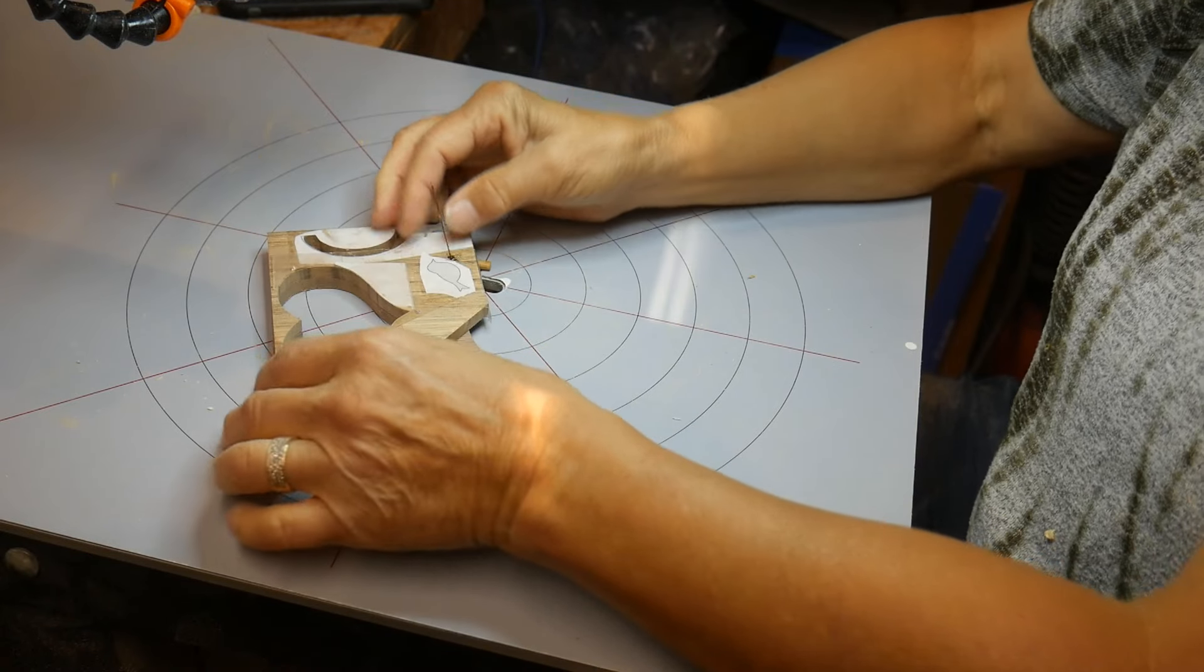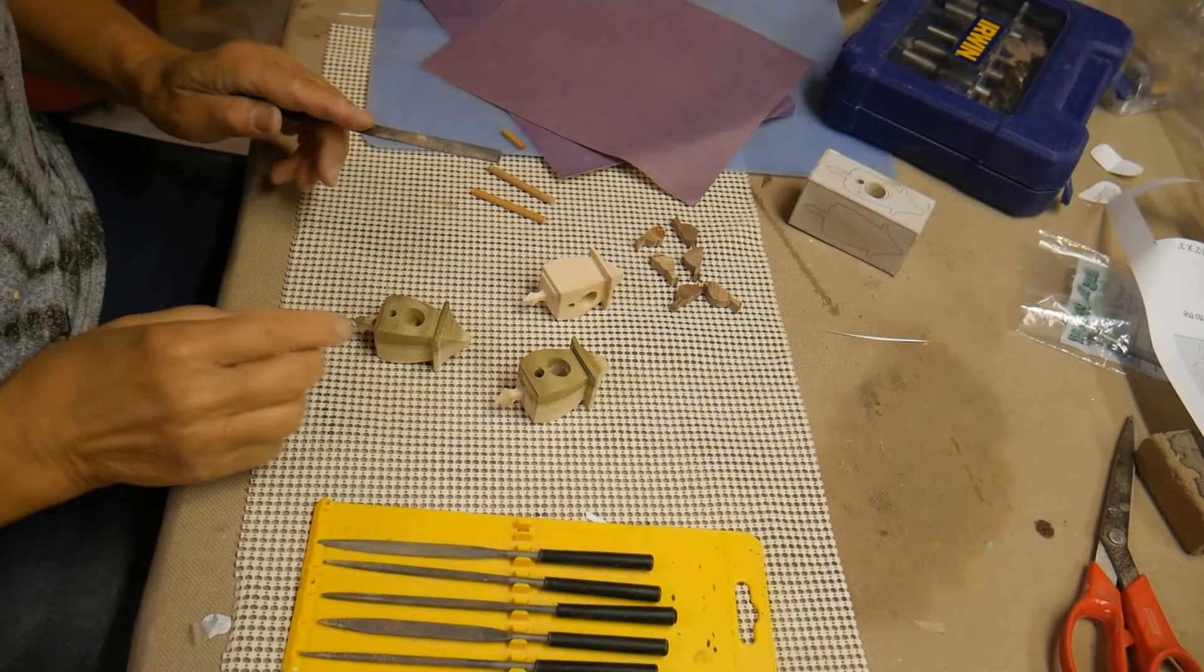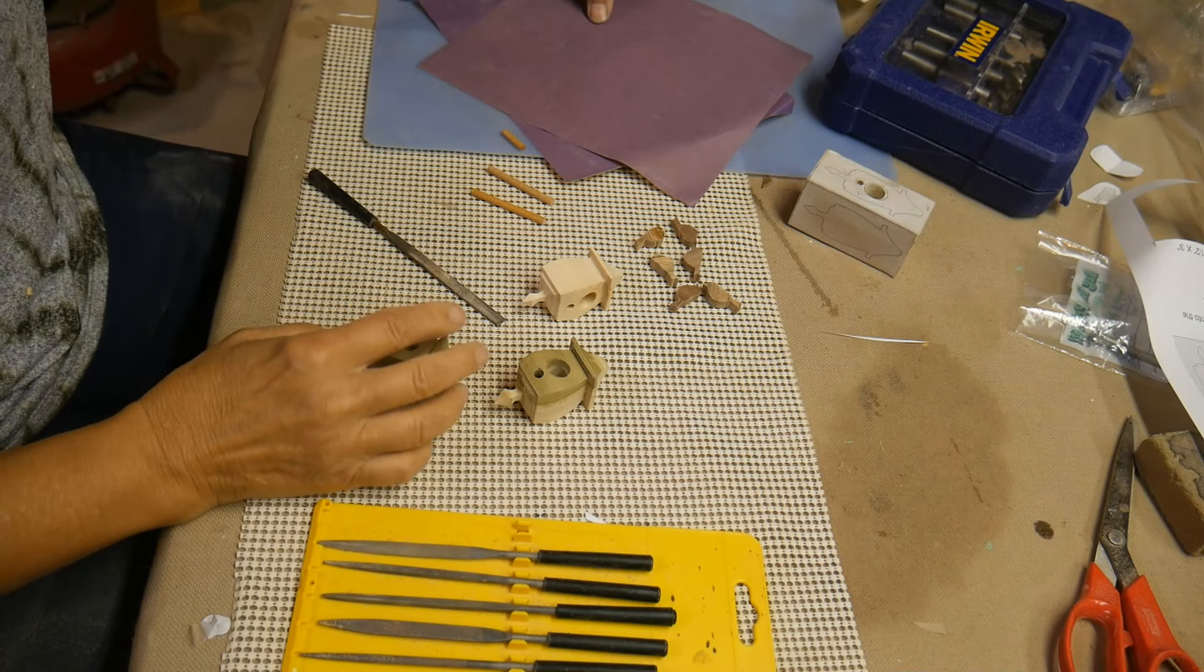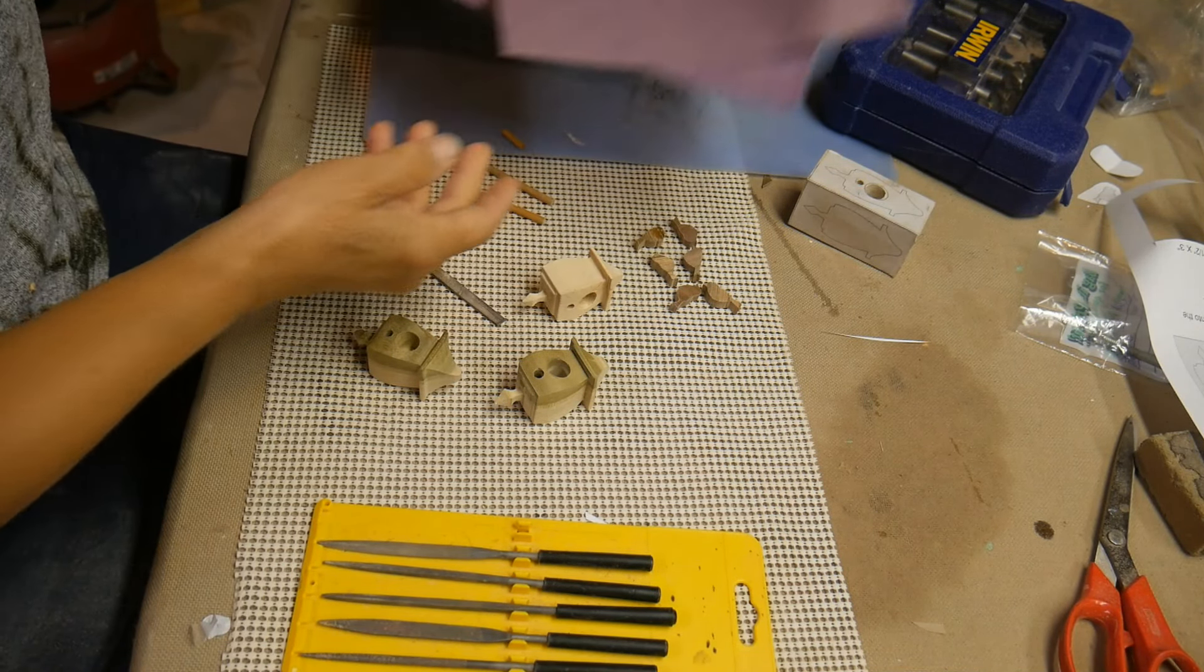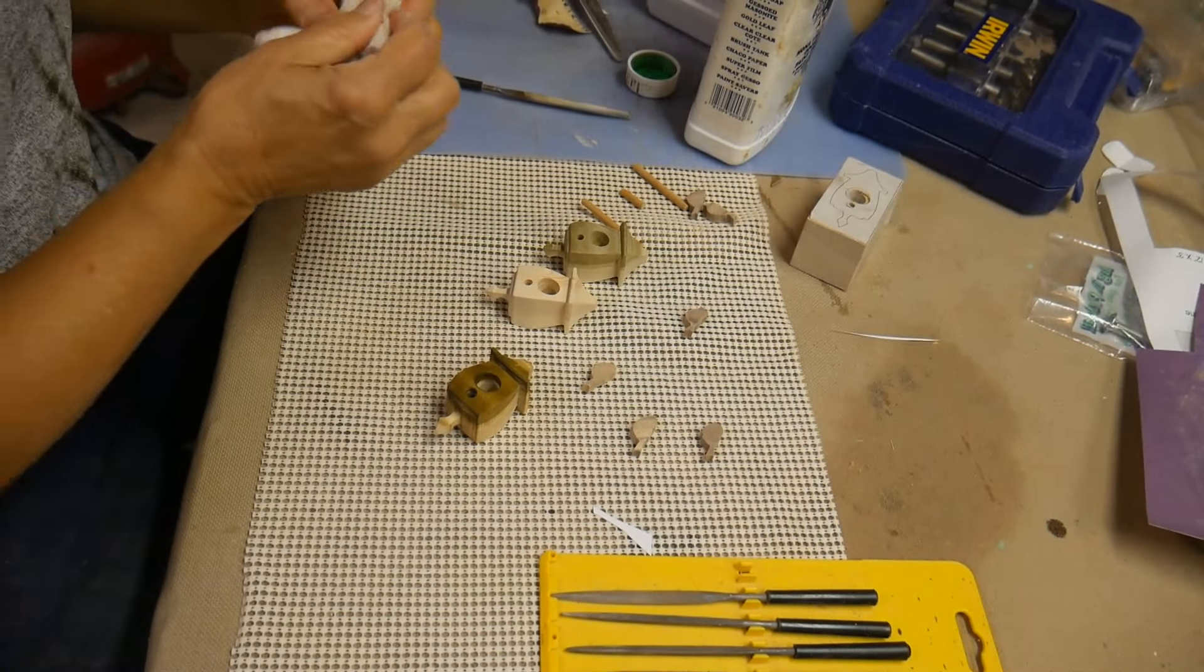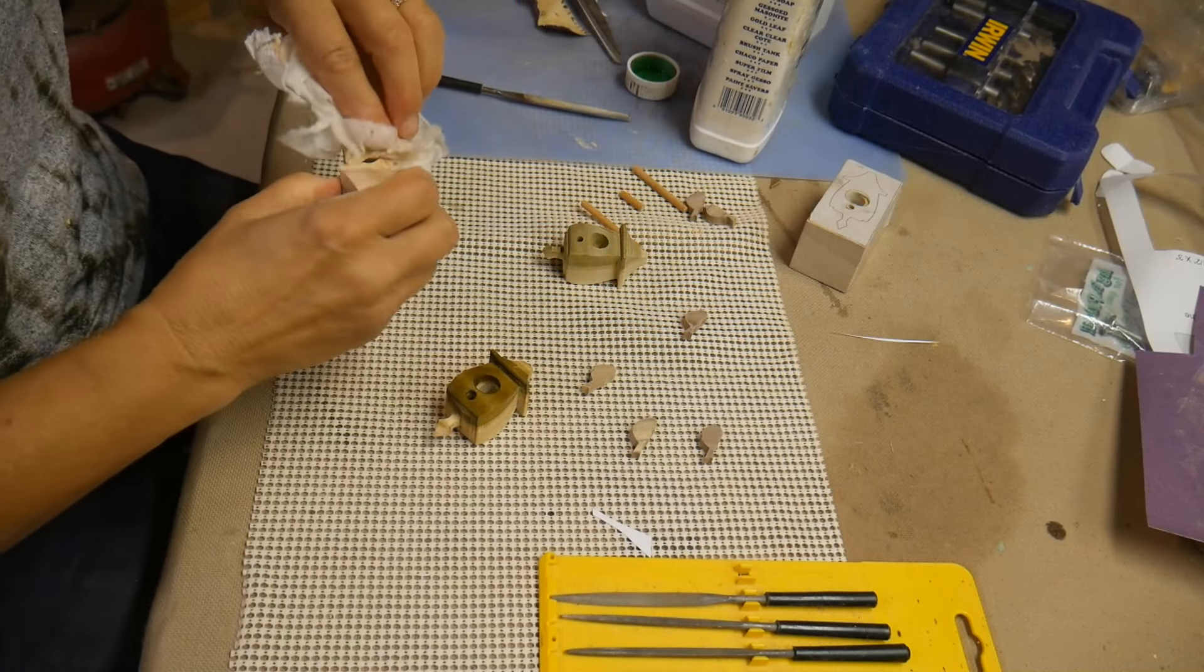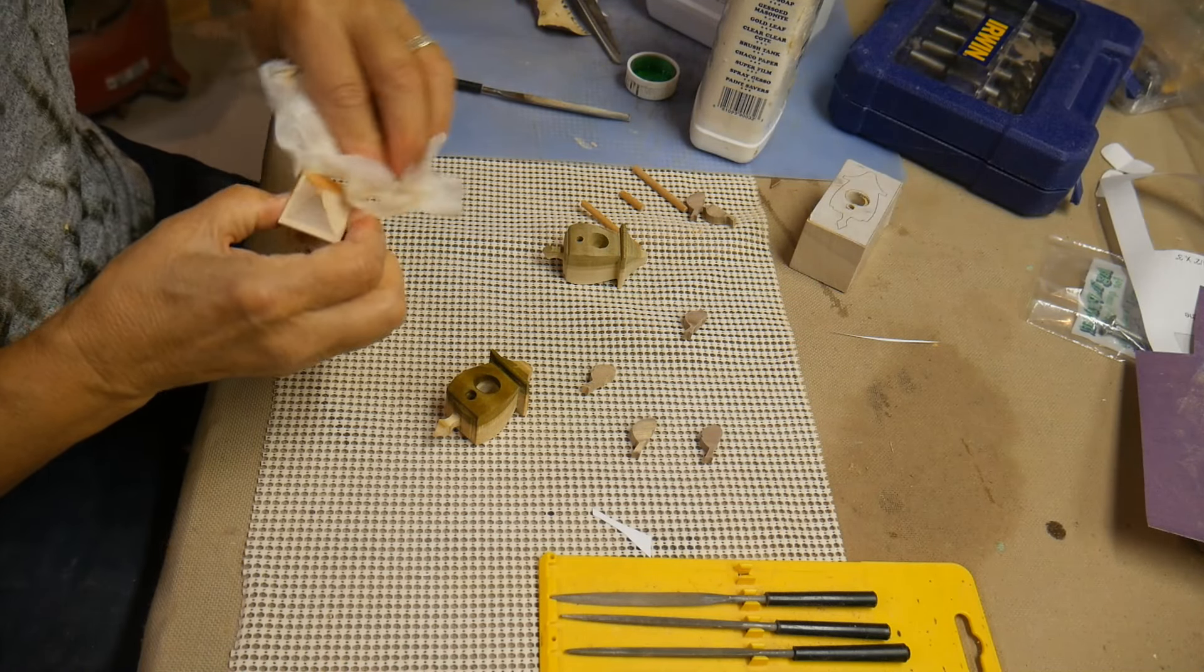Now it's time to sand away any imperfections that may be there with some files and some regular sandpaper. Once I finish my sanding, I like to take mineral spirits and wipe off all of the sawdust.